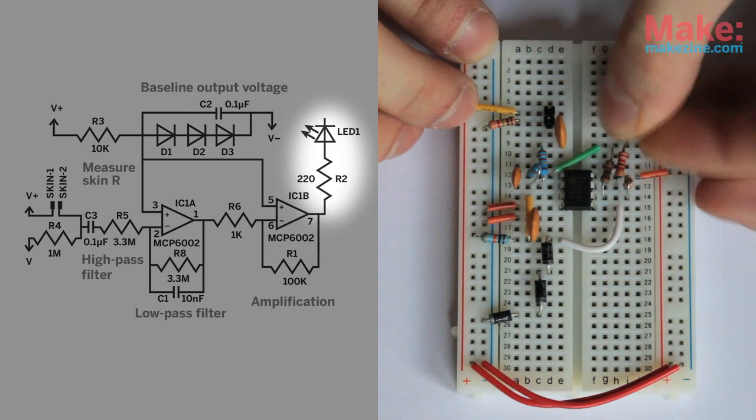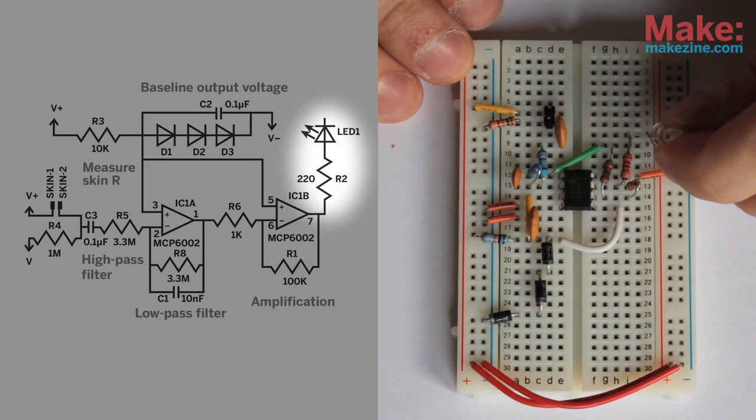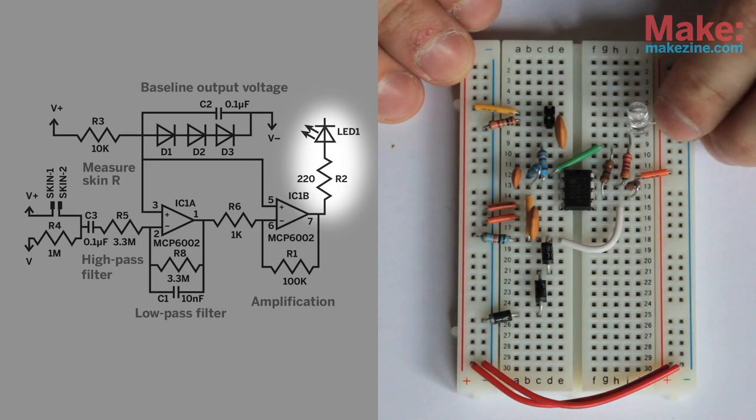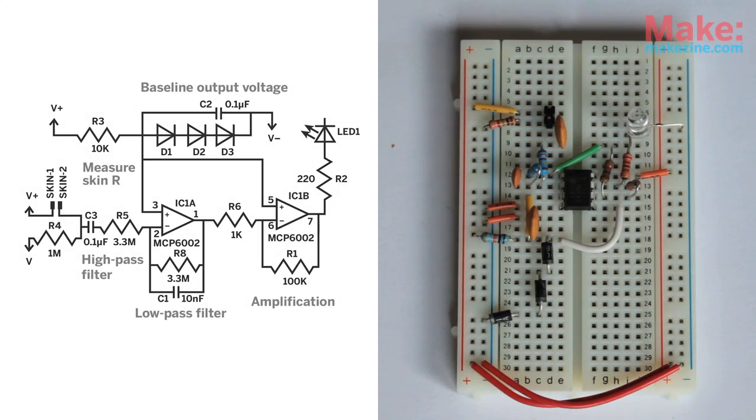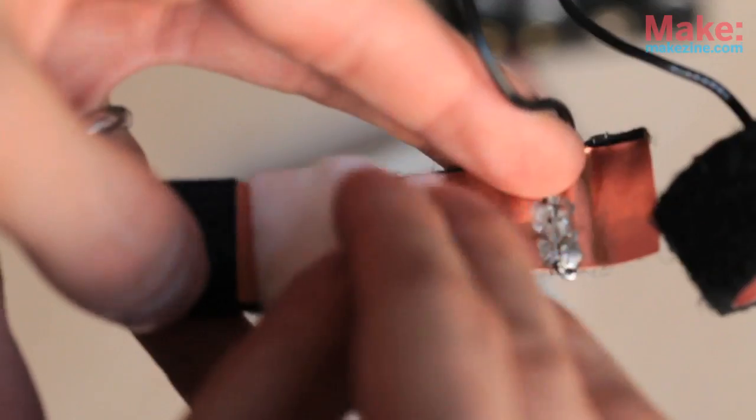And last but not least, a current limiting resistor connects our second op-amps output to our LED. Then all you have to do is connect power and your sensors. For your own safety, only use four AA batteries and sterilize the sensors with rubbing alcohol.